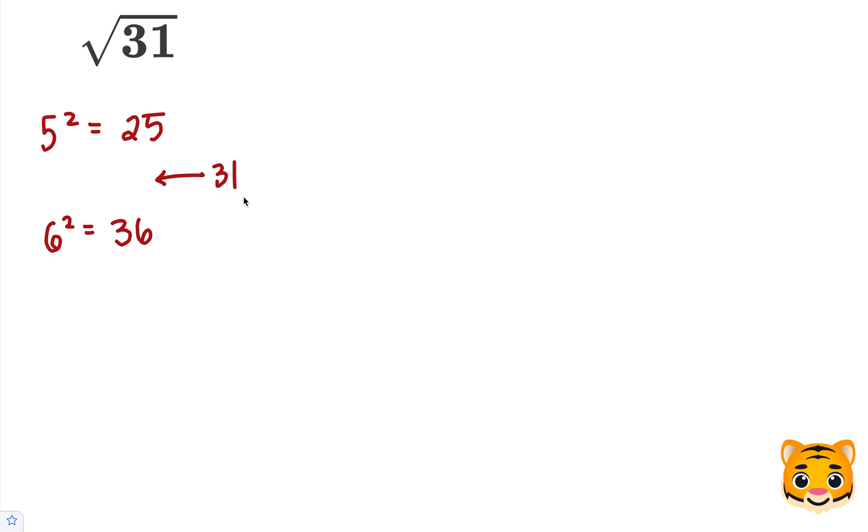We can see that 31 lies between 25 and 36. Using this information, we can write the following inequality: 25 is less than 31, which is less than 36.